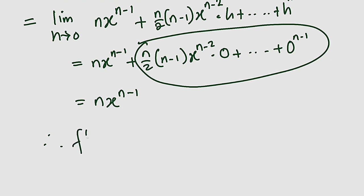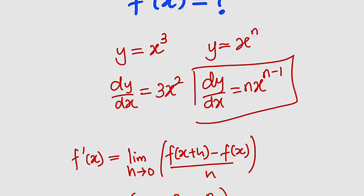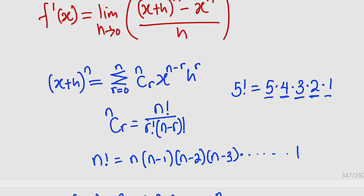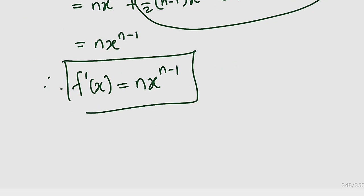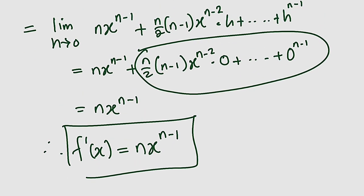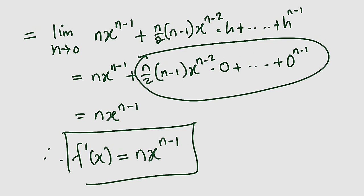Therefore, f prime of x equals nx to the power of n minus 1. And that's exactly what we were asked to prove — if y equals x to the power of n, its derivative is nx to the power of n minus 1, derived using the first principle. Thank you for watching. Do share with your learning colleagues and don't forget to subscribe to my YouTube channel for more exciting videos. Bye-bye.